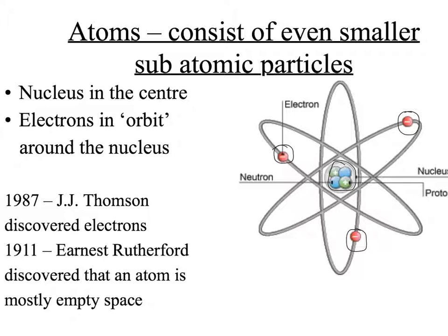In 1987, J.J. Thomson discovered electrons. In 1911, Ernest Rutherford discovered that an atom is mostly empty space with a small positive charge concentrated in a tiny area within the center of the atom.